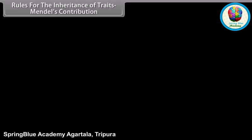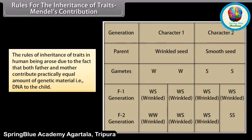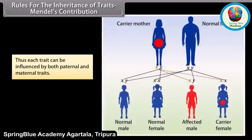Rules for the inheritance of traits — Mendel's Contribution. The rules of inheritance of traits in human beings arose due to the fact that both father and mother contribute practically equal amounts of genetic material, that is DNA, to the child. Thus, each trait can be influenced by both paternal and maternal traits.